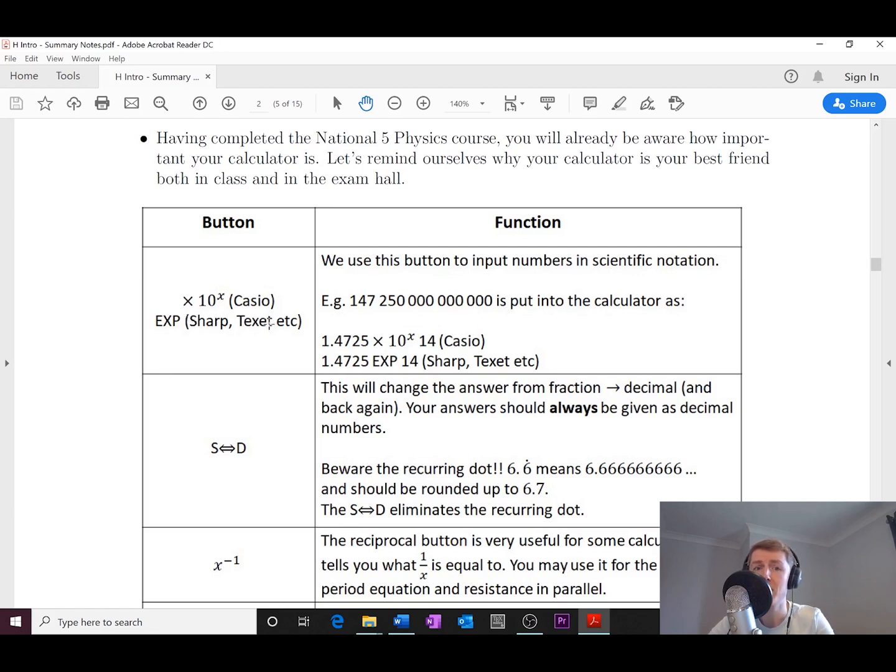So if you wanted to input this really large number, for example, then you would type in 1.4725 and then the times 10 to the x button in your Casio and then 14. But if you had a Sharp or a TExIT, you would type in that number, then EXP, and then 14 to type your numbers in scientific notation.